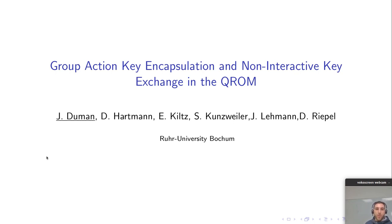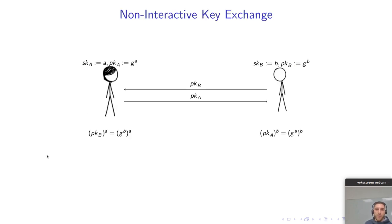This is a joint work with Dominic Hartmann, Eike Kills, Sabrina Kunzweiler, Jonas Lehmann and Doreen Riepel. So what is a non-interactive key exchange? We have Alice and Bob, they have secret and public keys and they exchange their public keys. Besides exchanging their public keys there is no interaction and they can compute a shared key.